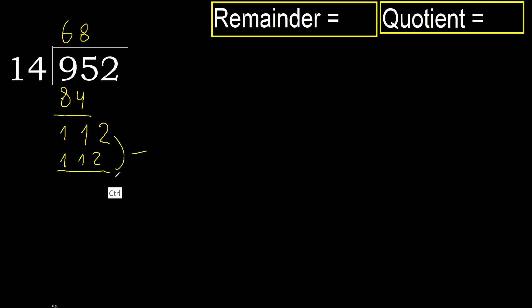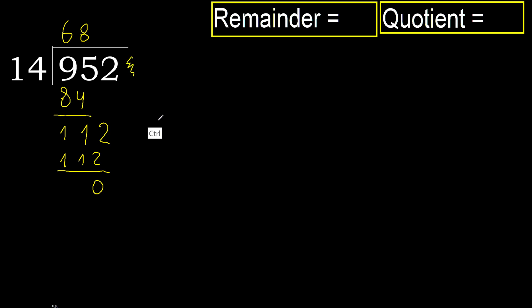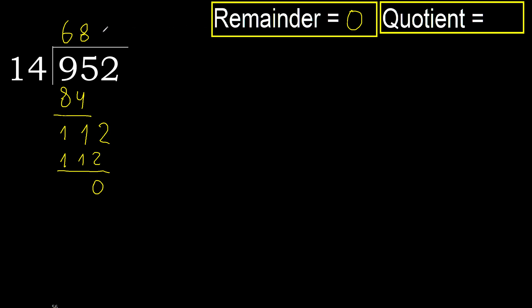Subtract 0, next. There is no number, therefore finish. 952 divided by 14 is 68.